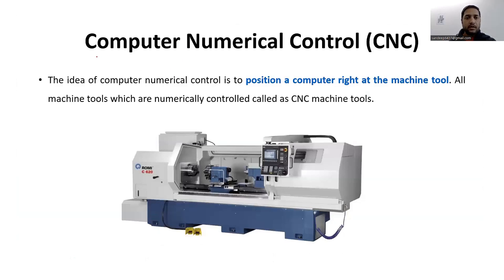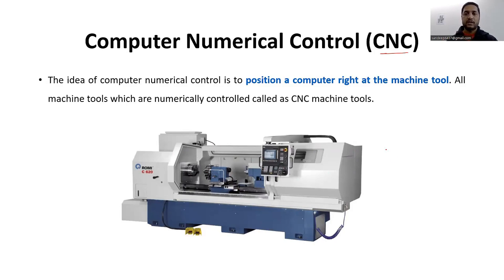Computer Numerical Control, or CNC, positions a computer directly at the machine tool. All numerically controlled machine tools are called CNC machine tools. In simple terms, if one computer is controlling one machine tool, that is called a CNC machine. This figure shows a CNC machine tool with the controller, spindle, and tailstock visible.